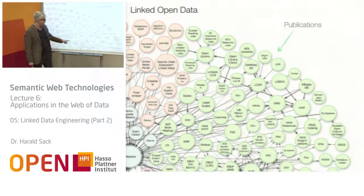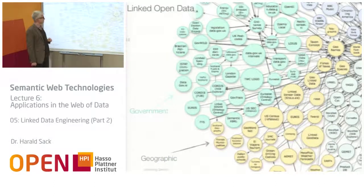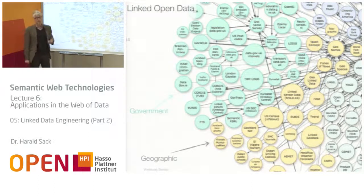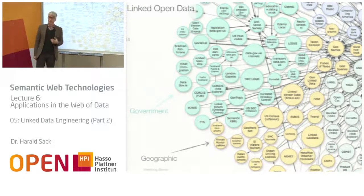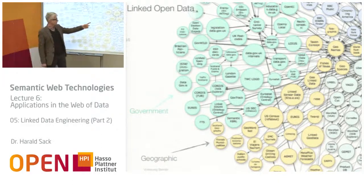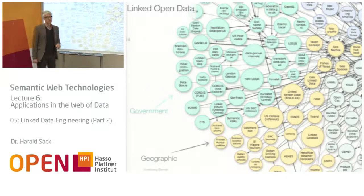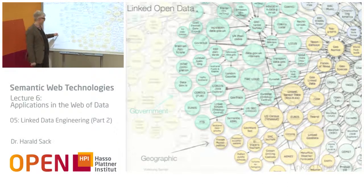The green category here is data about publications — mostly bibliographical data. On the other side, also in green, we have government data, which is a rather huge part of the available Linked Open Data Cloud and is still continuously growing. The yellow part here is so-called geographic data — for example, the GeoNames database, US Census data, LinkedGeoData, GeoWordNet and similar datasets. This is geographically related data, which is also rather important.